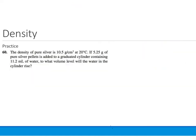Alright, for some more practice, the density of pure silver is 10.5 grams per cubic centimeter at 20 degrees C. If 5.25 grams of pure silver pellets is added to a graduated cylinder containing 11.2 milliliters of water, to what volume level would the water in the cylinder rise? This is one of the type of problems where it might be helpful to draw a small picture. So if I draw a picture of the graduated cylinder, it's filled with water to 11.2 milliliters. If I have pellets of silver that I add into there, the water level will go up.